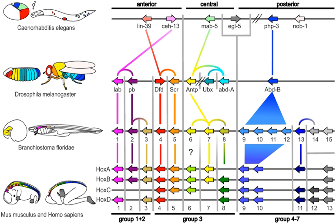In 1980, Christiane Nüsslein-Volhard and Eric Wieschaus described gap genes which helped to create the segmentation pattern in fruit fly embryos; they and Lewis won a Nobel Prize for their work in 1995. Later, more specific similarities were discovered — for example, the distal-less gene was found in 1989 to be involved in the development of appendages or limbs in fruit flies, the fins of fish, the wings of chickens, the parapodia of marine annelid worms, the ampullae and siphons of tunicates, and the tube feet of sea urchins. It was evident that the gene must be ancient, dating back to the last common ancestor of bilateral animals before the Ediacaran period, which began some 635 million years ago.